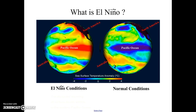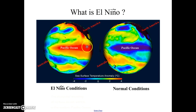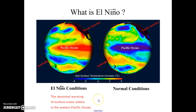El Nino basically is a condition that occurs when the normal conditions of the Pacific Ocean change. Normally, the eastern side of the Pacific Ocean has cold water. During El Nino, the eastern side of the ocean has warm water. It's the abnormal warming of these ocean waters in the eastern part of the Pacific Ocean.